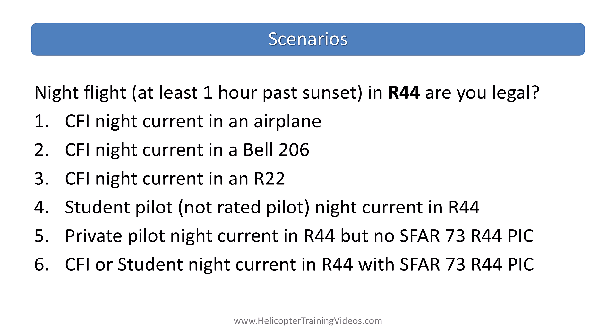Let's walk through some scenarios. You're going to do a night flight — at least one hour past sunset — in an R-44. Are you legal in each of these situations? One: the CFI is night current in an airplane. Two: the CFI is night current in a Bell 206. Three: the CFI is night current in an R-22. Four: the student pilot who's not a rated pilot yet is current — R-44 night current. Five: a private pilot is night current in an R-44 but does not have an SFR 73 R-44 PIC endorsement yet or isn't current. Six: either the student or the CFI is night current in the R-44 and has an SFR 73 R-44 PIC endorsement, and is current if necessary. Think about each one — would you be legal or not?